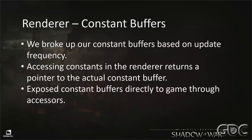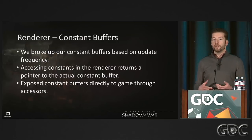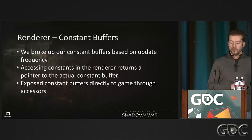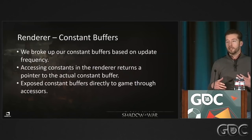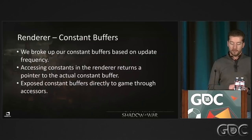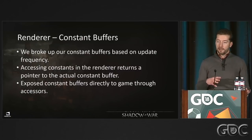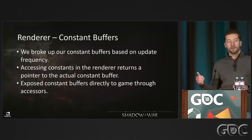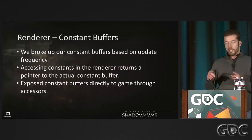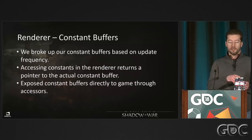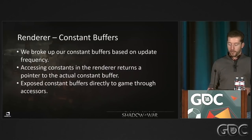The first fix was introducing named constant buffers. We followed the standard approach: group by update frequency — frame constant buffer updated once per frame, view constant buffer, etc. The other key change to avoid copies was exposing the actual platform-specific constant buffer all the way back to frame code via accessors. So instead of copies up the abstraction chain, when game code sets a value it writes directly into the platform-specific constant buffer that the GPU uses on consoles.